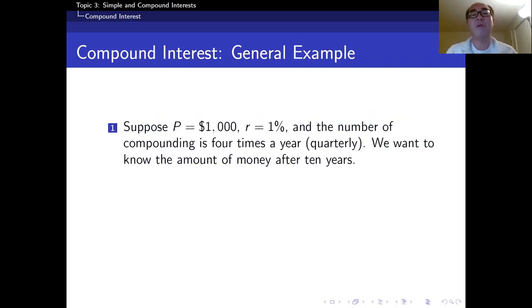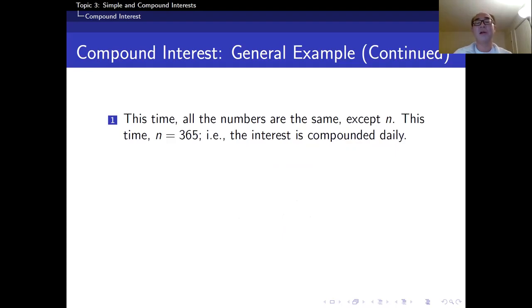Here's an example. Once again, the original principal is $1,000, the interest rate is 1%, and the number of compounding is quarterly, four times a year. We want to know the amount of money after 10 years. We just use the formula. The principal is $1,000, the interest rate is 0.01. We have to divide the interest rate by 4 because it's compounded quarterly, four times a year. Then the power is 4 times 10. From the calculator, I got $1,105.03.